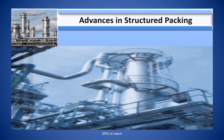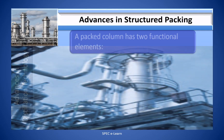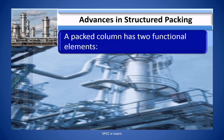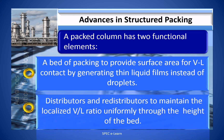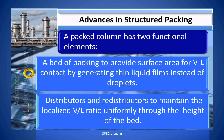A packed column has two functional elements: first, packing to provide surface area for vapor-liquid contact by generating thin films of liquid instead of droplets; second, distributors and redistributors to maintain the localized vapor-liquid ratio uniformly through the height of the bed.